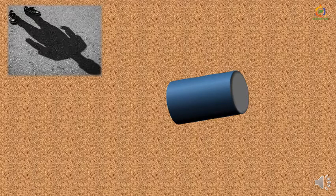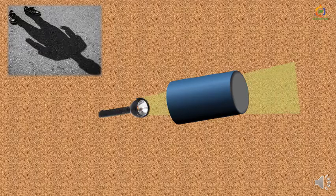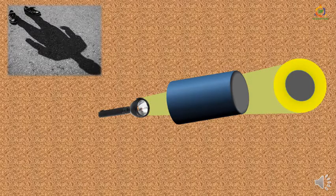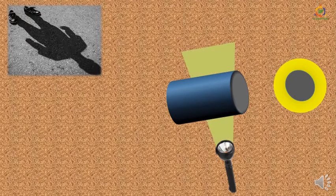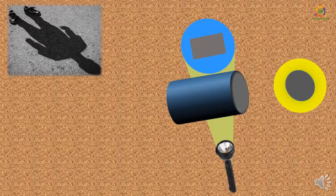Let us see one experiment. You must have a solid pipe. If you hold a torch and switch it on, you observe a circular shadow. But now if I change the position of the torch — keep it on the other side and switch it on — you observe a different shadow. From one side it looks circular; from another side it is rectangular.